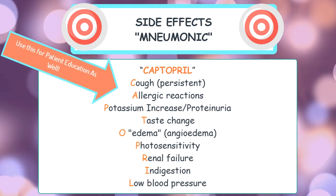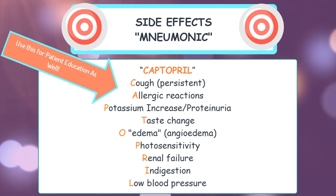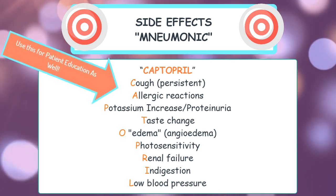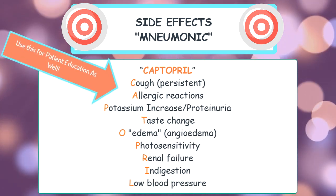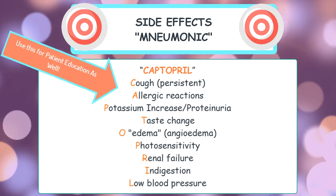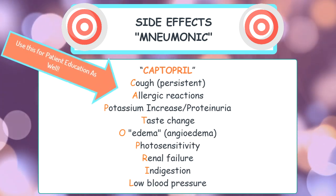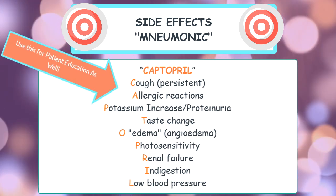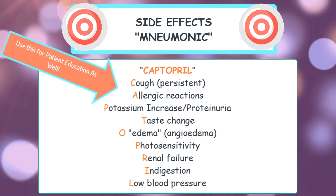T is for taste change — some patients complain of a metallic taste in the back of their mouth. O is for angioedema, so you have to look for any signs and symptoms of edema around the neck and facial area or anywhere when giving a patient an ACE inhibitor. P is for photosensitivity — you want to educate your patient on proper use of sunblock and to protect themselves from the sun.